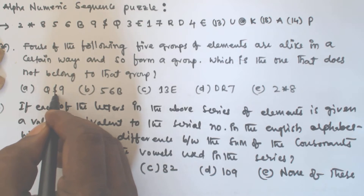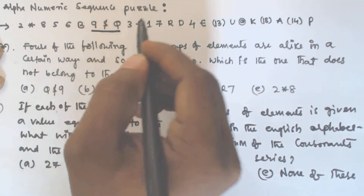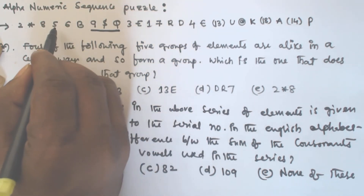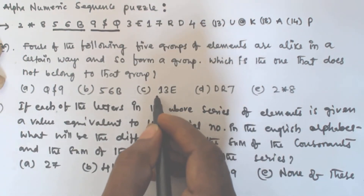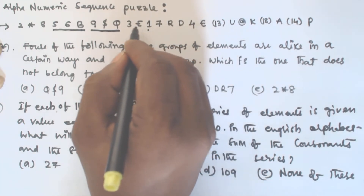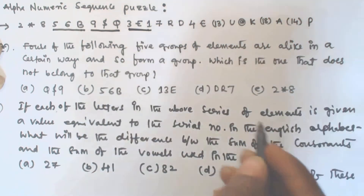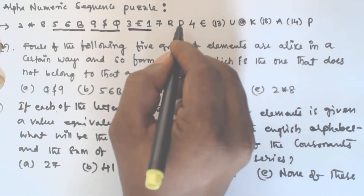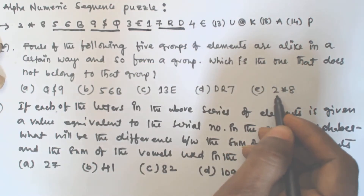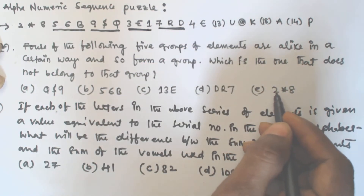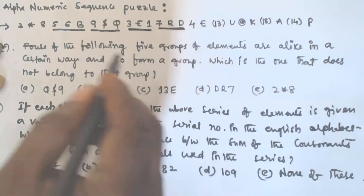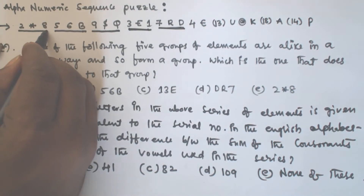Let us consider Q$9 — so this is Q$9, the first one. The second one is 5,6,B. The next one is 1,3,E — so these three are together. Then D,R,7 — this is D, this is R, and this is 7. And the next one is 2 star 8.